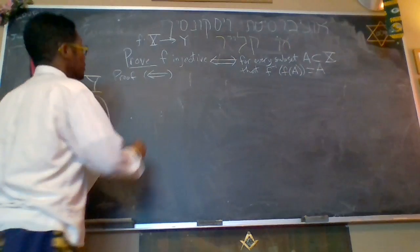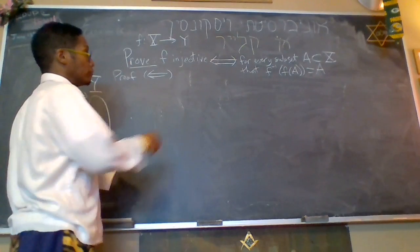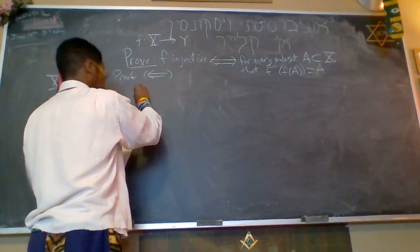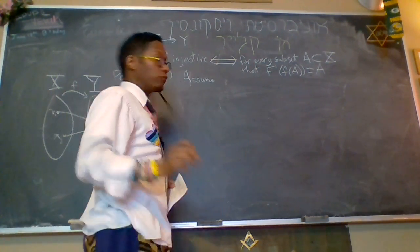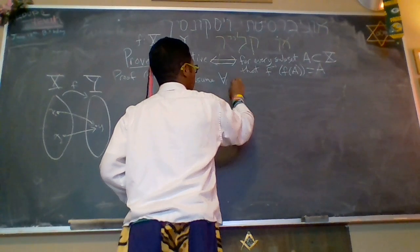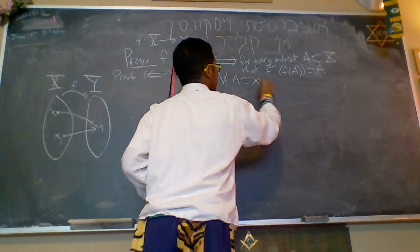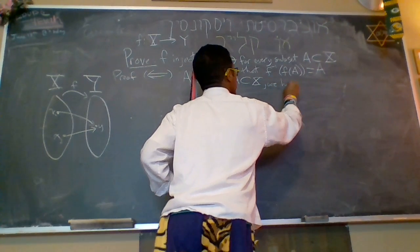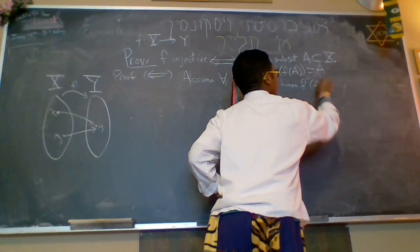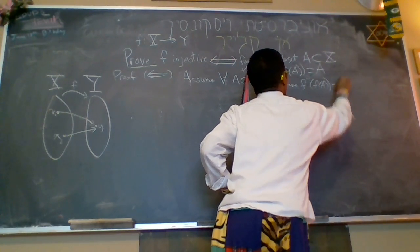Okay, so let us assume the hypothesis. So we're going to assume that for every subset, for every subset A of X, we have the inverse image of f of A equals A.